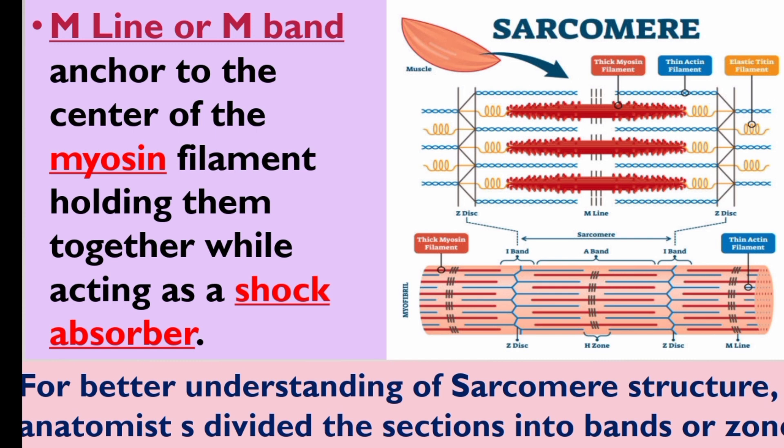For better understanding of sarcomere structure, anatomists divide the sections into bands or zones. In the diagram, the red color is thick myosin filament. There are vertical black lines in the myosin filament called the M-line or M-band.